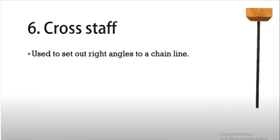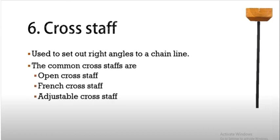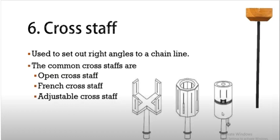Next, the cross-staff, which is used to set out right angles. What are 90 degree angles? This is mostly cross-staff. Types include open cross, French cross, and adjustable cross. Adjustable cross can be set at any angle, but open cross is set at right angles.